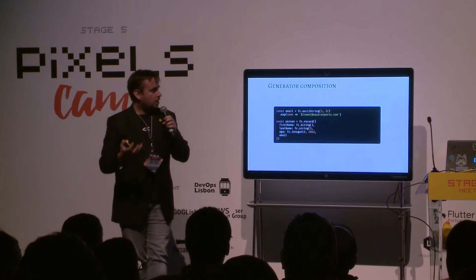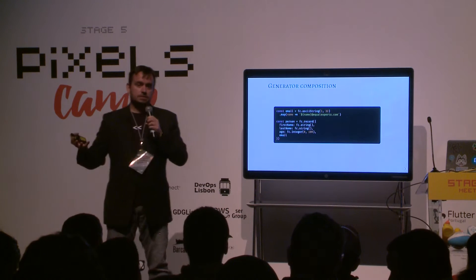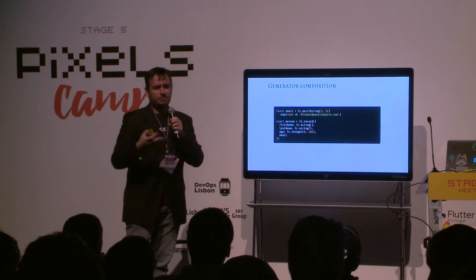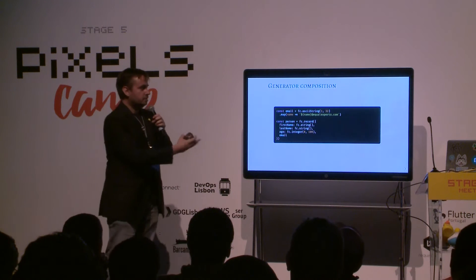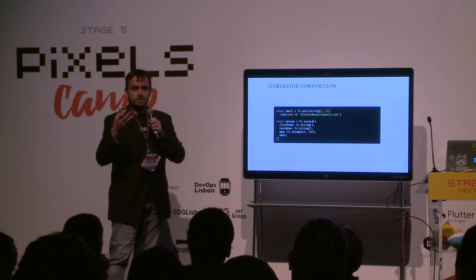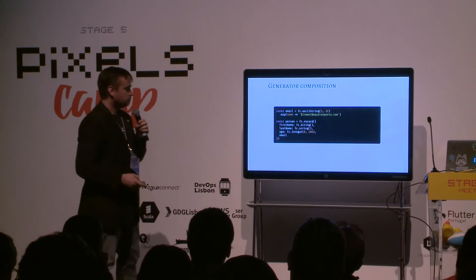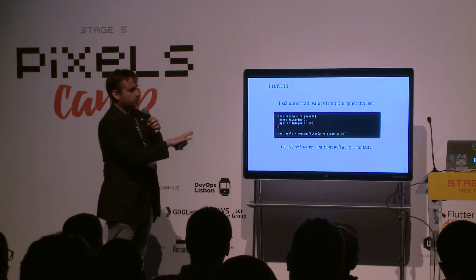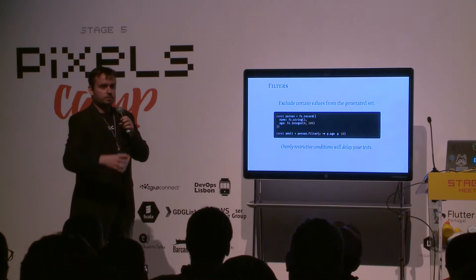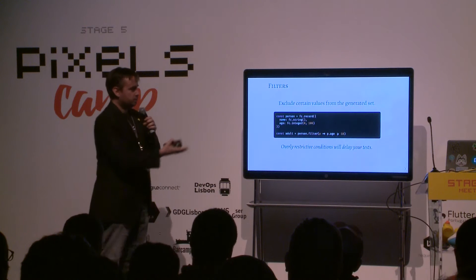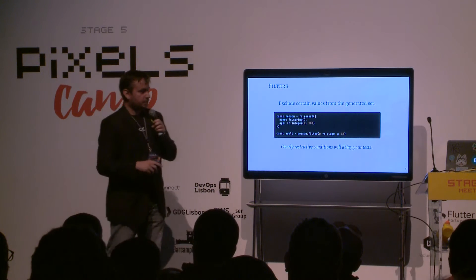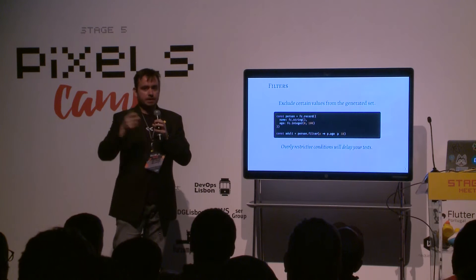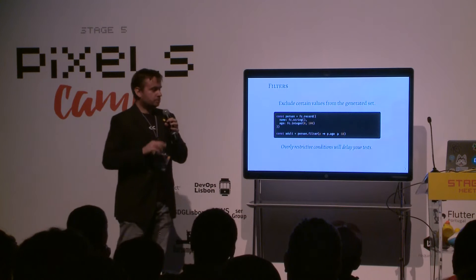Every time you use this person arbitrary — these are called arbitraries, by the way — in your tests, you're providing your properties with these things. Every time the property runs, which is by default in most libraries about 100 times, it'll generate 100 person records and run your tests using those inputs. You can also apply a filter on the generator — for example, if you want just people with an age over 18. Bear in mind that very restrictive constraints might delay your tests, because it has to recreate something valid. So try not to abuse this.